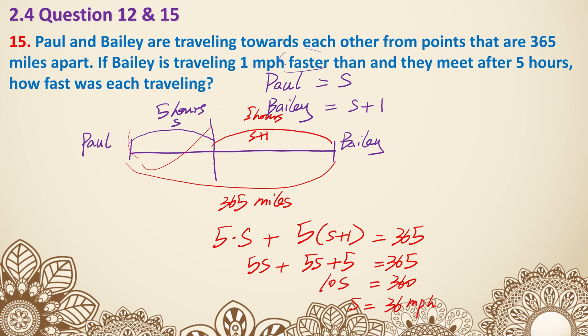Let's pause right there, because we're not fully done. The question is asking how fast was each traveling. So if s is 36, then s plus 1 would have to be 36 plus 1, which is 37 miles per hour. So Paul travels at 36 miles per hour, and Bailey travels at 37 miles per hour. And that is question 15.